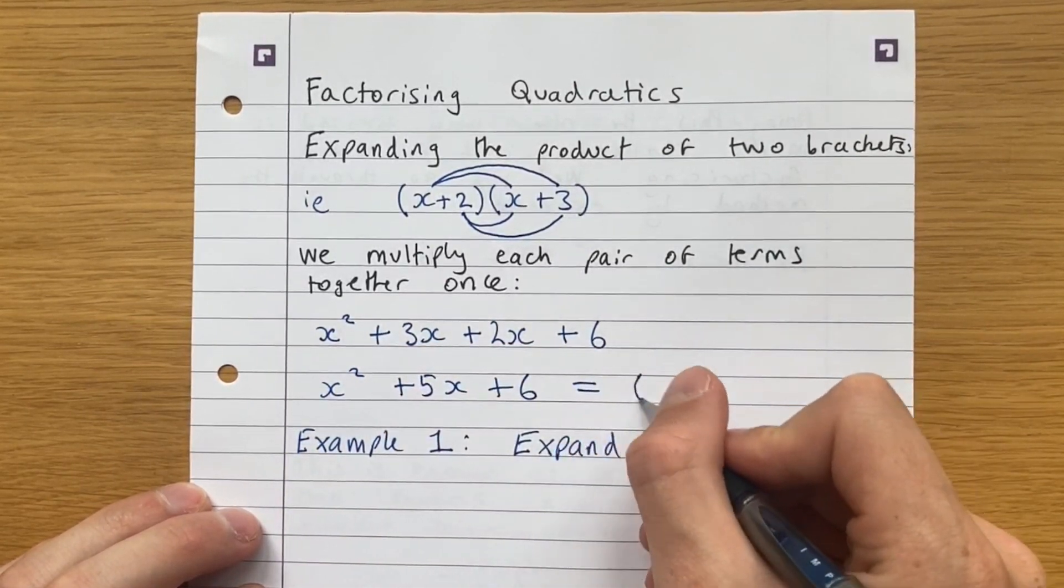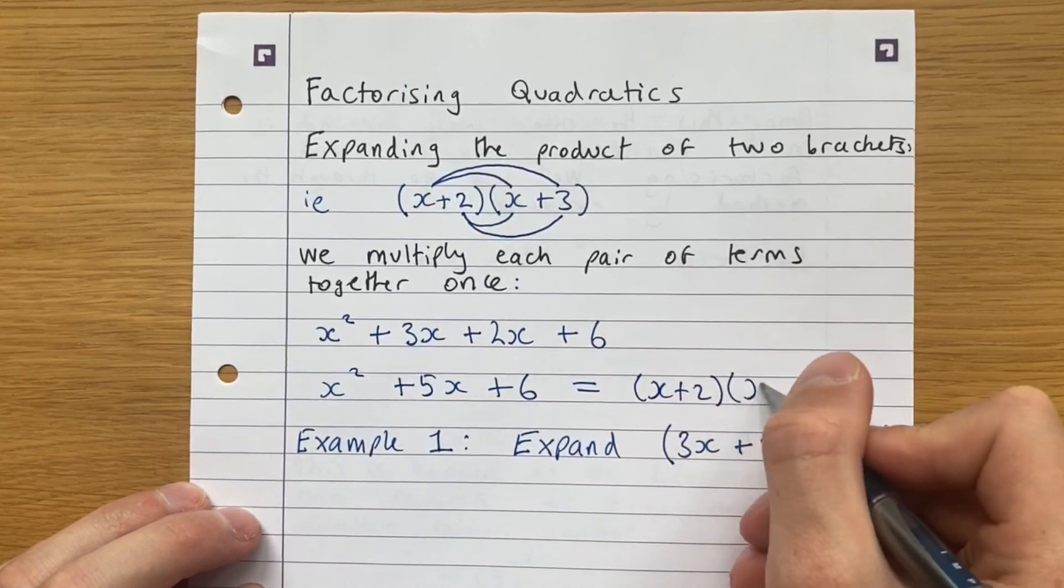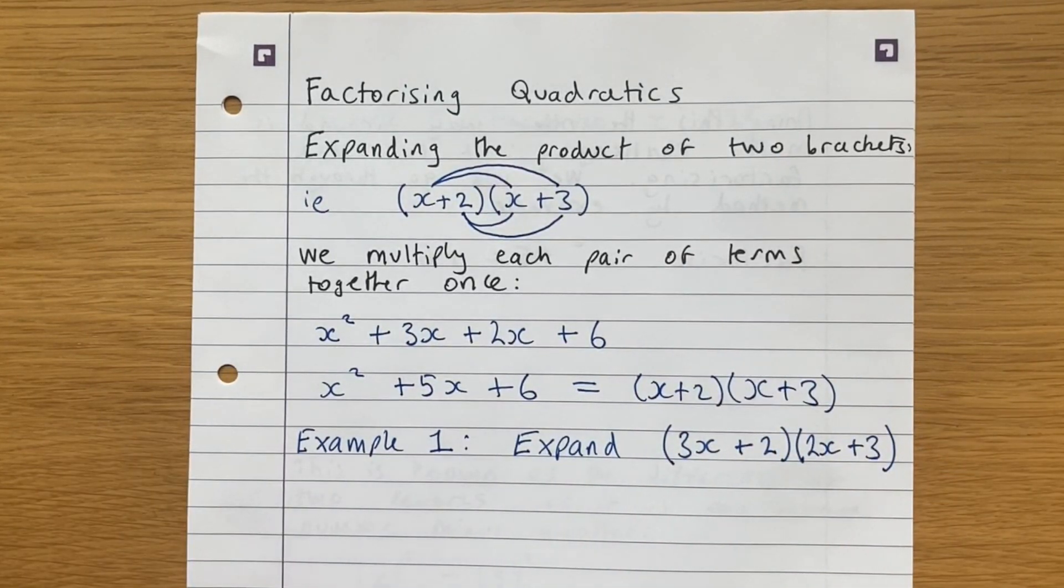And you can simplify this by adding 3x and 2x together to give you x squared plus 5x plus 6. And that's our answer, that is equal to x plus 2 times x plus 3. Let's do another example.